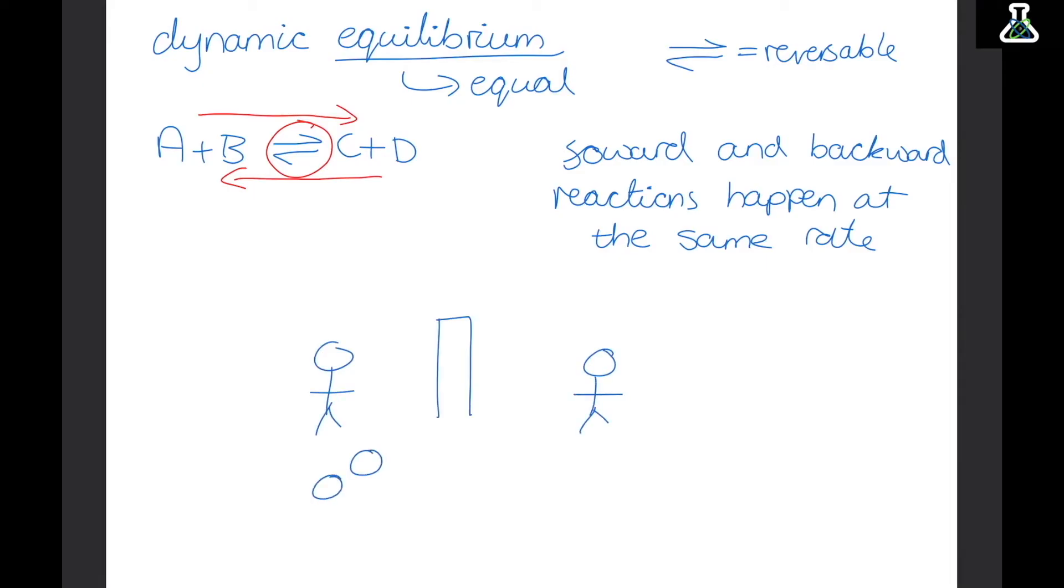If we have two people each side of a wall, and one of them has six balls. And the person with six balls starts throwing them over to the other person. Now at the start this person doesn't have any balls. Once it's got a few it can start throwing them back over at the person. Now it takes a while but once this person starts throwing the balls back at the same rate dynamic equilibrium is reached. So for every ball this person throws over this person throws one back.